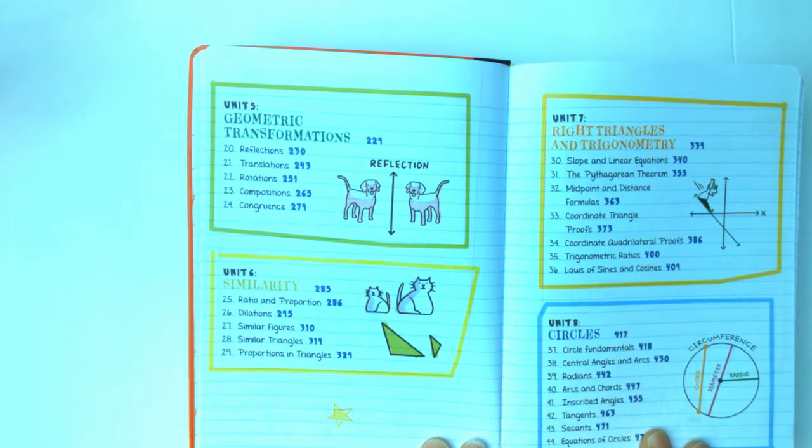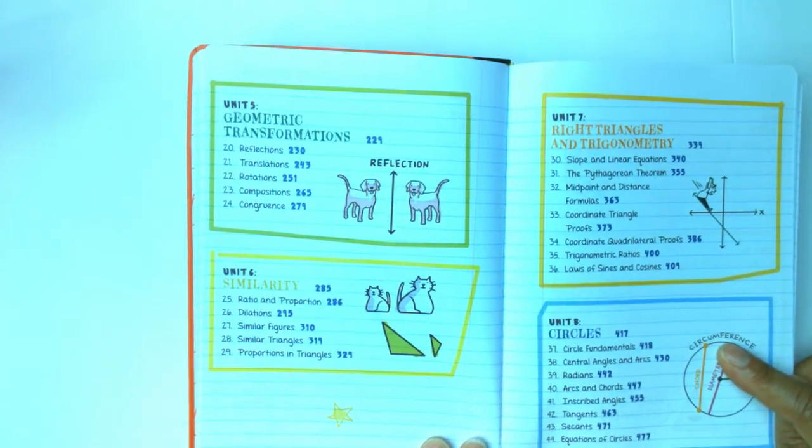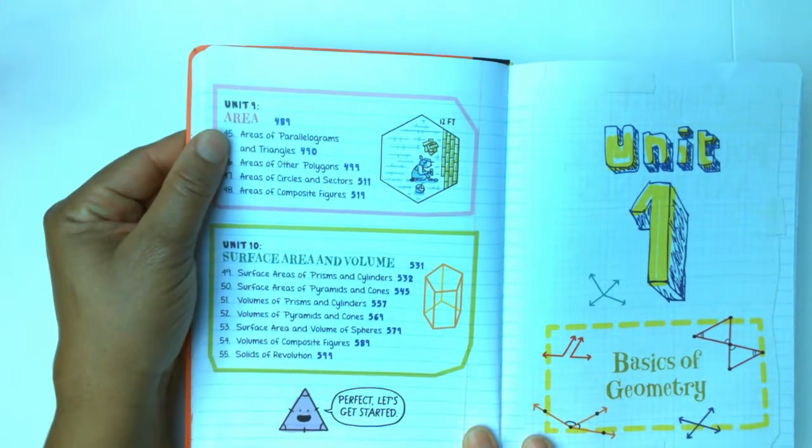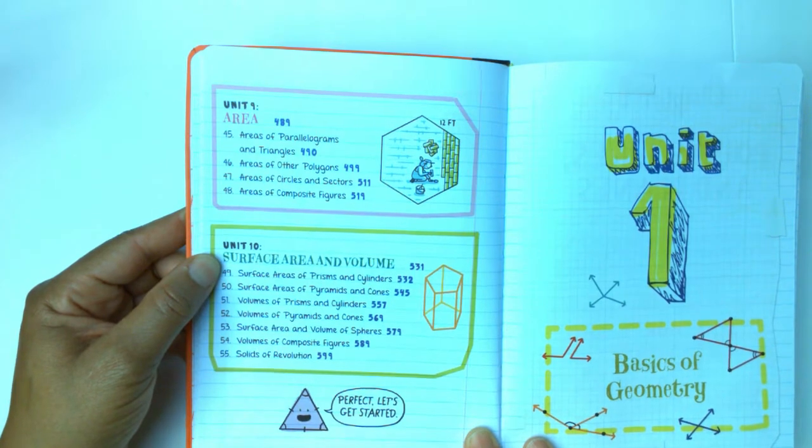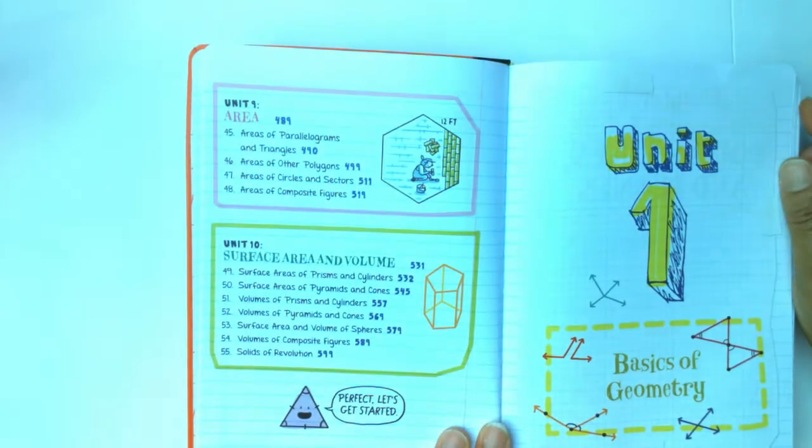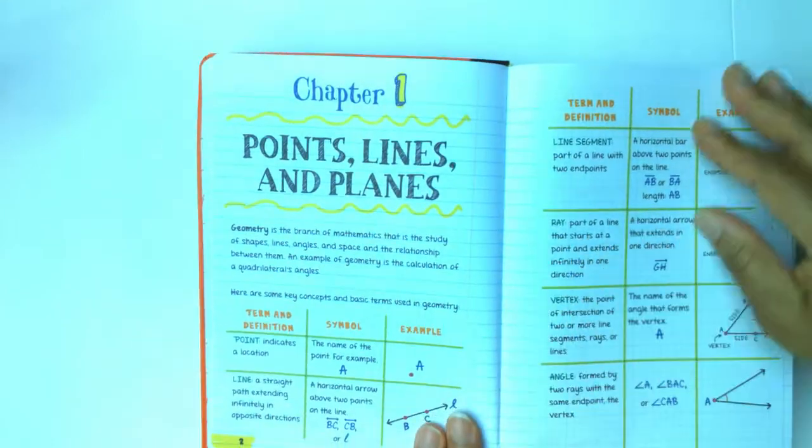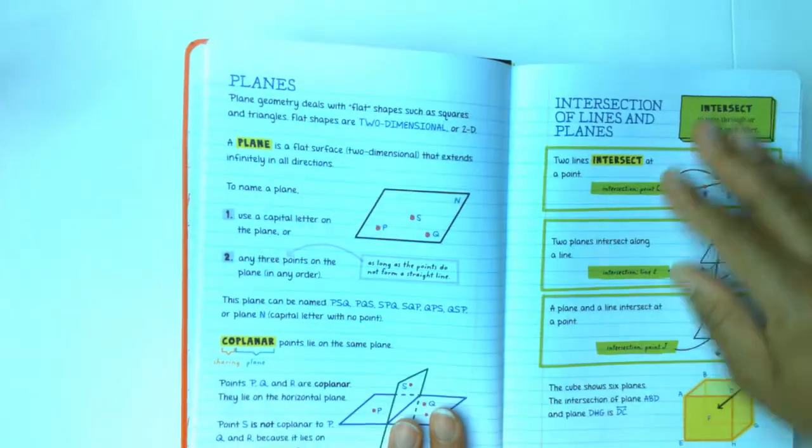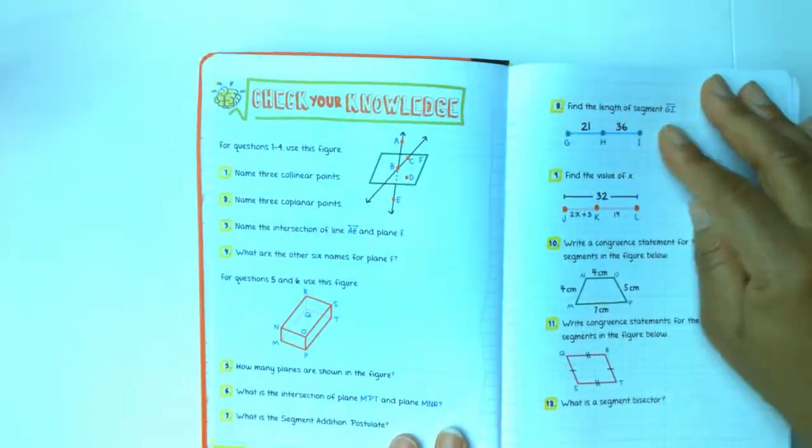Unit 5: Geometric Transformations, Unit 6: Similarity, Unit 7: Right Triangles and Trigonometry, Unit 8: Circles, Unit 9: Area, and Unit 10: Surface Area and Volume. Each book has units, and in the units there are chapters. At the end of each chapter there is a Check Your Knowledge section.